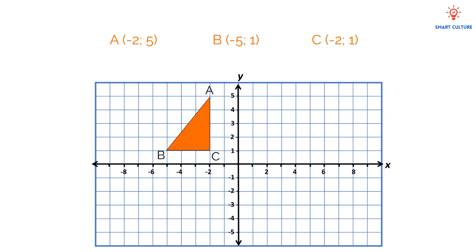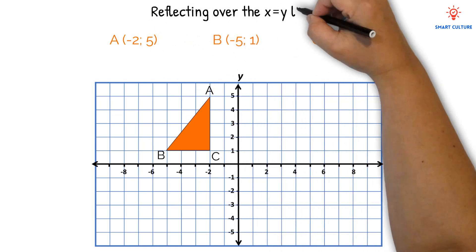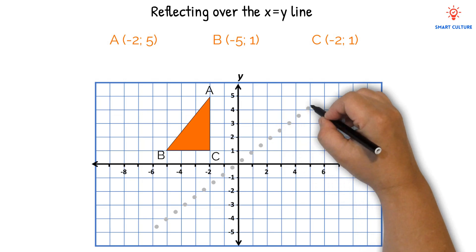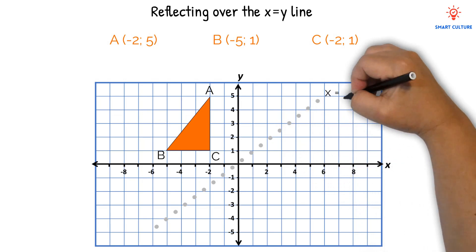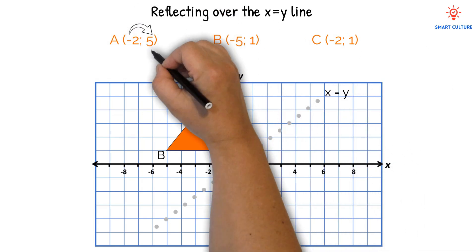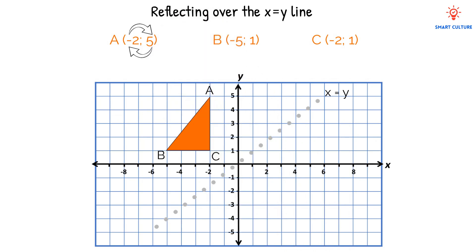Let's do one more reflection, this time over the x-equals-y line. When you reflect across the line x equals y, you are essentially switching the x and y-coordinates of each point. The line x equals y represents a diagonal line where the x and the y-values are equal. So let's write the coordinates for the reflected triangle.